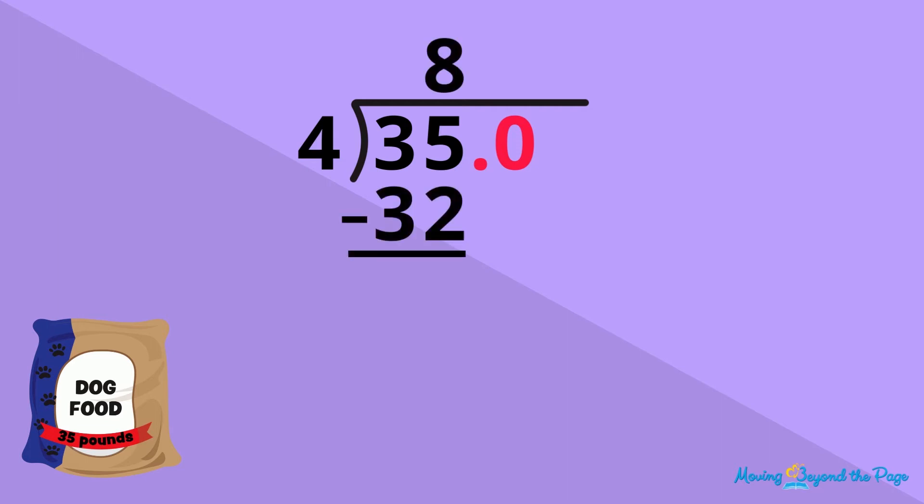Back to our dog food problem. Let's start dividing 35 by 4, but this time, let's add a decimal point and 0 to the dividend. Remember that even though we see a decimal in the dividend, we ignore it as we divide. Just follow the same steps you use in whole number division.